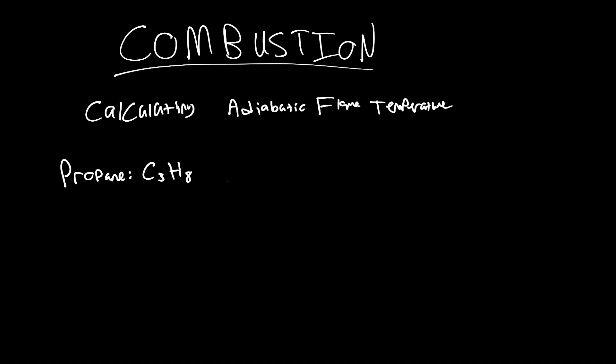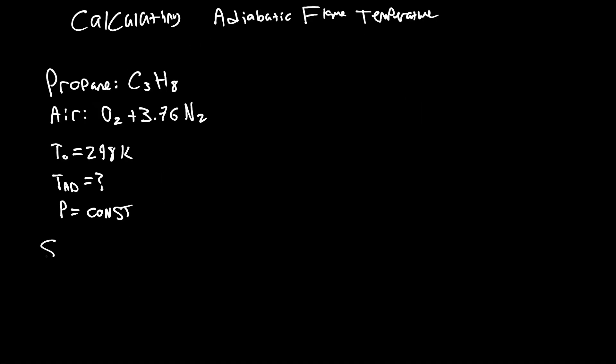So we will be considering the combustion of propane in air at a initial temperature of 298 Kelvin, and we are looking to calculate the adiabatic flame temperature based on a constant pressure process. So first, as with any combustion problem, we're going to be taking a look at the stoichiometric equation.